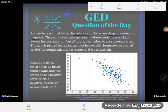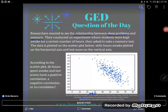They conducted an experiment where students were kept awake for a certain number of hours, then asked to take a memory test. The data is plotted on the scatter plot below with hours awake plotted on the horizontal axis. So horizontal means left right, so this is hours awake.